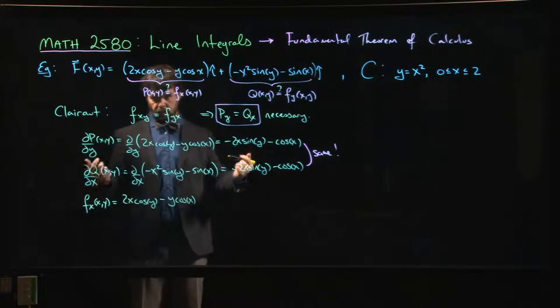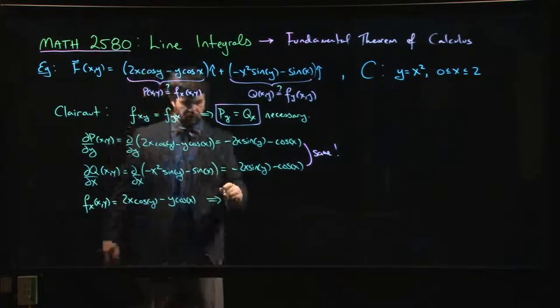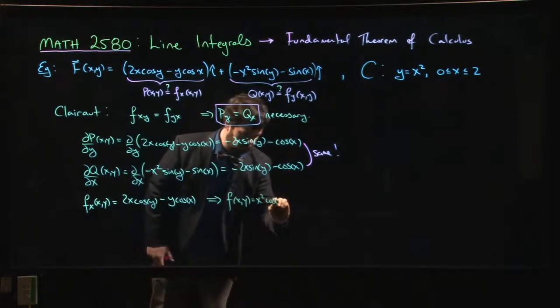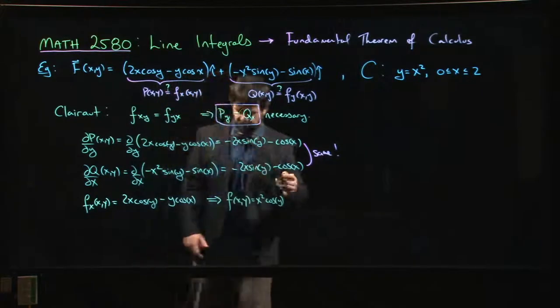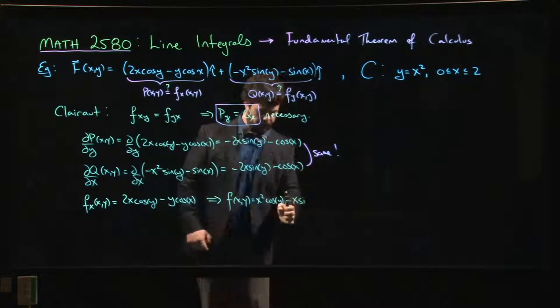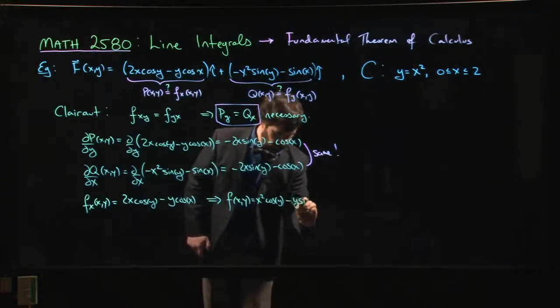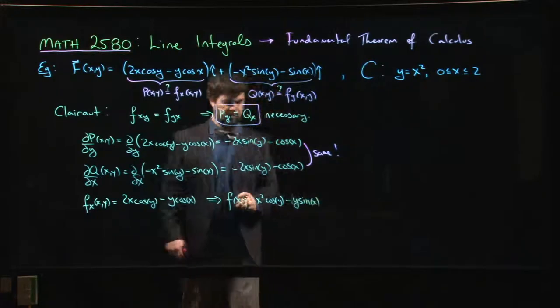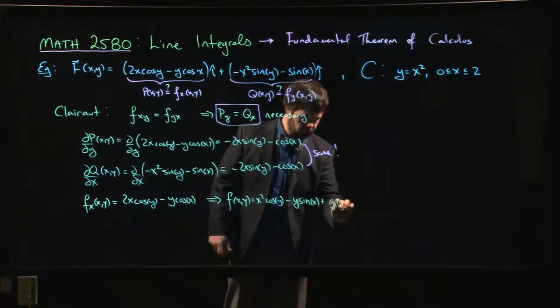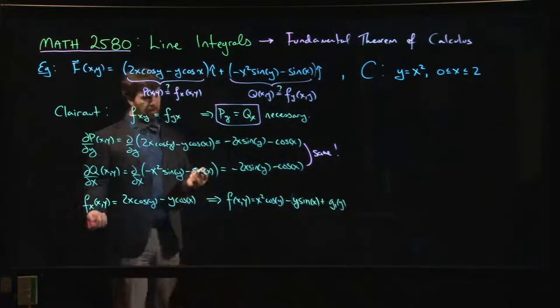So that's the partial derivative with respect to x of some function. Well we know how to figure out what that function must have been, we take the antiderivative. Antiderivative of 2x is x squared, and the antiderivative of cos is sin. I'm sorry, minus y, y sin x. Plus possibly there's some function of y, because if there's something that depends only on y when you take the partial with respect to x it's going to disappear.